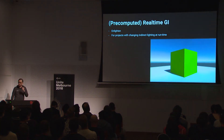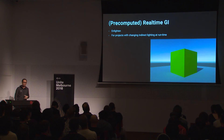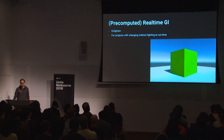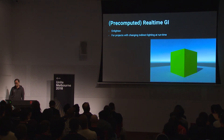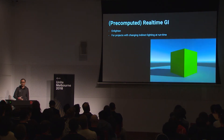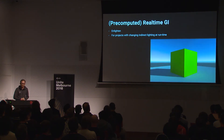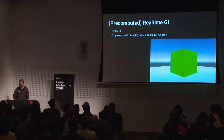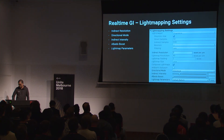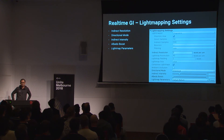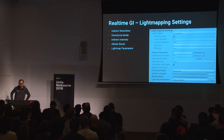If your project requires indirect lighting that changes at runtime, you need pre-computed real-time GI, which is handled by Enlighten. The light mapping settings for real-time GI include: indirect resolution, directional mode, indirect intensity, albedo boost, and light map parameters.